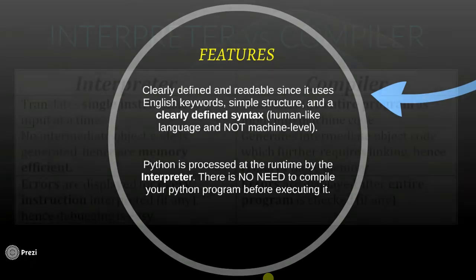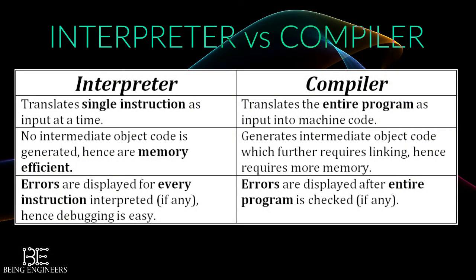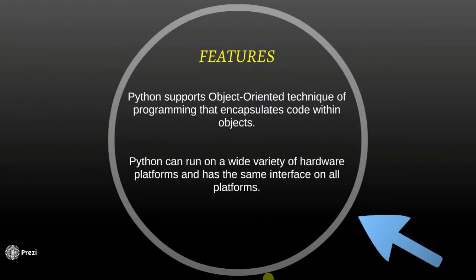What is the difference between an interpreter and a compiler? An interpreter translates each and every instruction one at a time, while a compiler translates the entire program into machine code at once. In an interpreter there is no intermediate object code, making them more memory efficient. A compiler generates intermediate object code which requires further linking and hence more memory. Also, in an interpreter, errors are displayed for every instruction interpreted, making debugging easy, whereas in a compiler, errors are displayed only after the entire program is scanned.